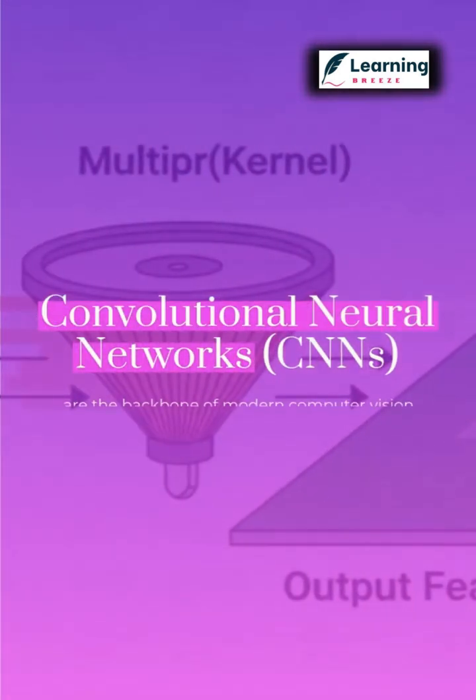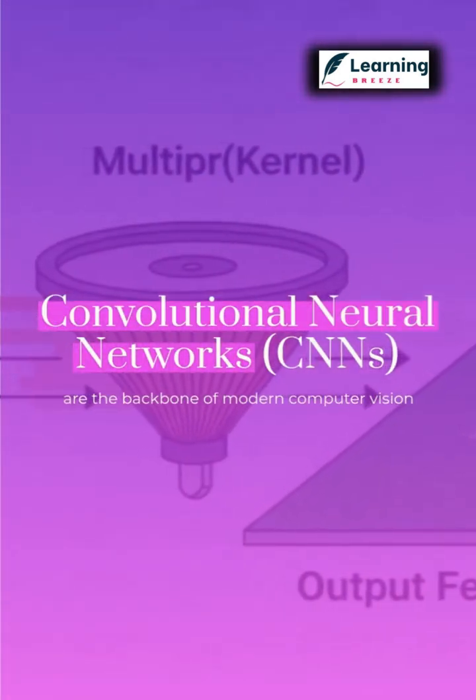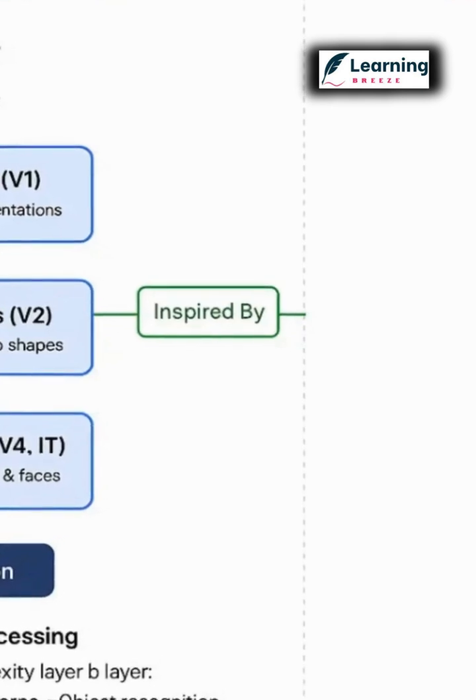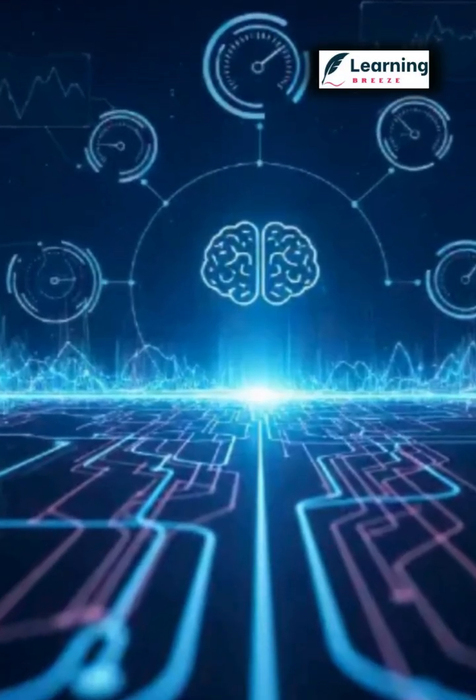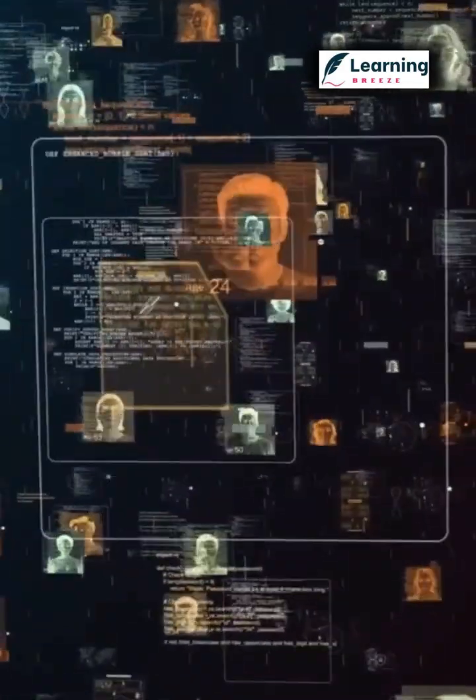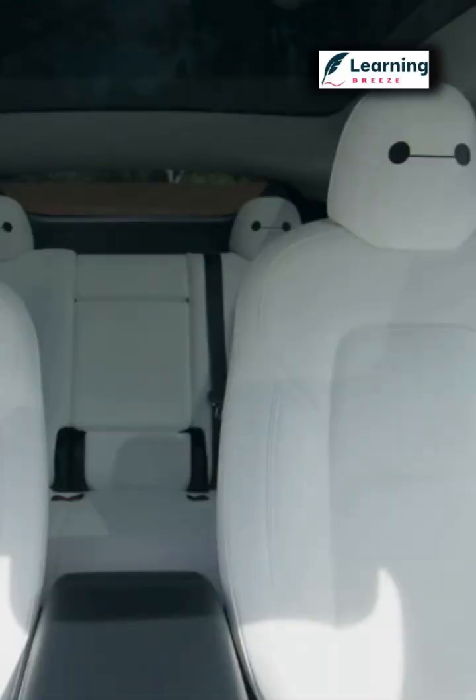Convolutional neural networks, or CNNs, are the backbone of modern computer vision. Inspired by how our brains process images, CNNs help machines see and interpret visuals, powering everything from facial recognition on your phone to self-driving cars.